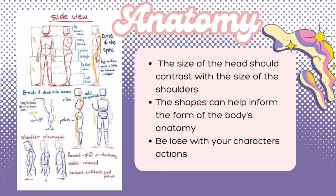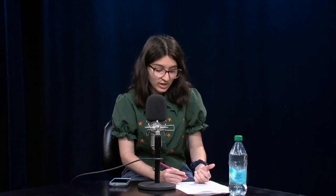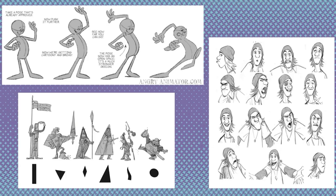As an animator, the anatomy of anybody is important as we want to understand how the muscles move in certain motions. We want to have our head line up to our shoulders. The shape can help inform the form of the body's anatomy, and be able to keep your form loose through actions. As you start to understand how the body works, you can now focus on exaggerating your character's features. You want your actions to have interesting motion. You want to define the features of the design so it can appear larger than life for the viewer. Think about Looney Tunes, of how cartoony they acted.